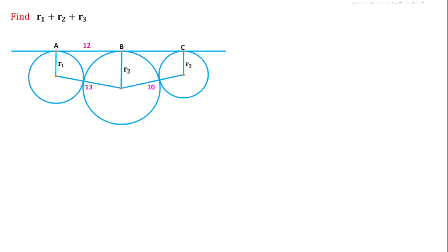Welcome to Definite Mind. In this question there are three circles with radius r1, r2, and r3, and a common tangent is passing through these three circles. The sum of r1 and r2 is 13 units, the sum of r2 and r3 is 10 units, and the length of tangent segment AB is 12 units. We have to find the sum of all three radii, that is r1 plus r2 plus r3.